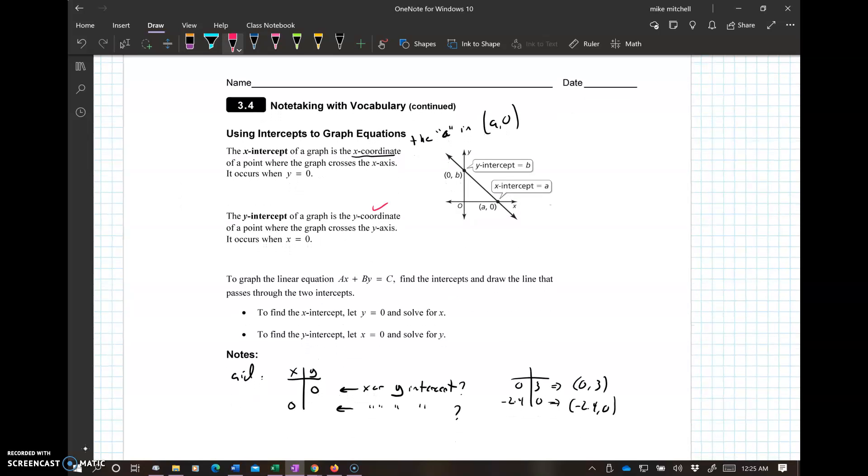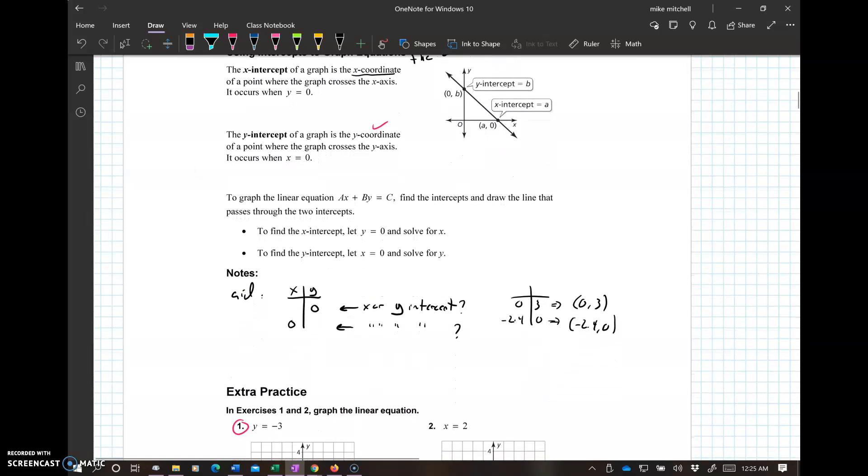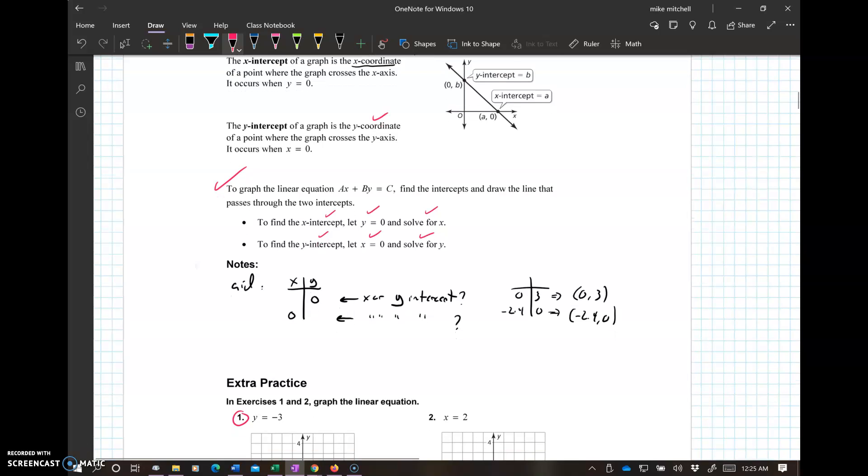The y-intercept of the graph is the y-coordinate. That's the b. So notice, you can write it as the b, the y-intercept, or you can write the point. Y-intercept is where it crosses the y-axis. To graph it, just like the song, find the x-intercept, let y equal 0, solve it for x, find the y-intercept, let x equal 0, solve for y, go down to the graph and plot them. And you got it.